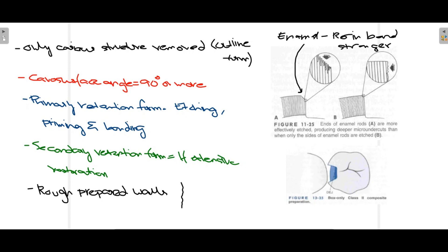Regarding the outline form of the composite cavity, only carious structure should be removed — no additional area. Regarding the cavo-surface angle, for amalgam it should be 90 degrees or more so the tooth structure doesn't break under occlusal loads. Regarding primary retention form — while amalgam required an occlusally converging cavity, since composite bonds chemically to the tooth structure there is no such requirement. The cavity only needs to include the carious area, and once all caries is removed, etching, priming, and bonding — the adhesive system — is applied so chemical retention occurs.